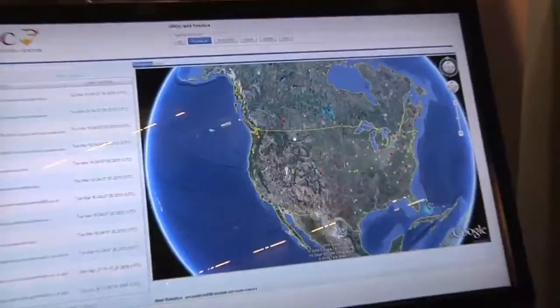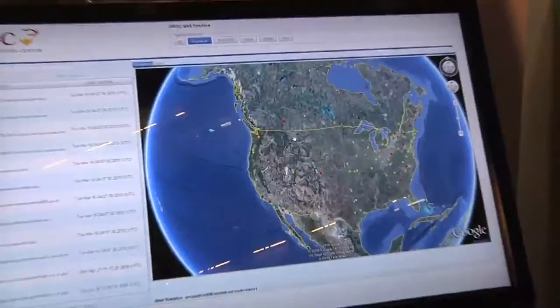And here we have a similar picture, but you notice that all of the tubes that we were showing before are gone. We're just showing all of the Planet Lab nodes in this case.